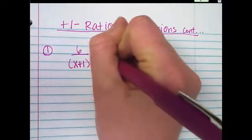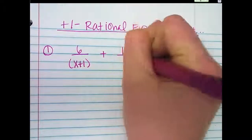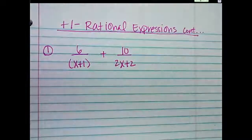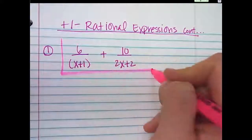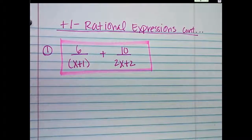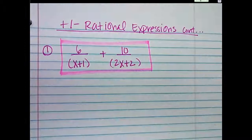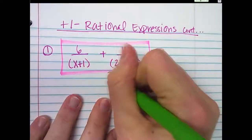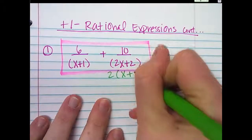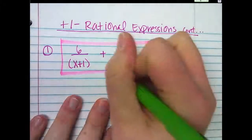Number 1: 6 over x plus 1, plus 10 over 2x plus 2. Okay, so first thing — let me factor all the denominators. Can I factor anything? I can take 2 out of this one. I'm just going to factor underneath it — I don't have to write it a thousand times — and I'll cross that out.